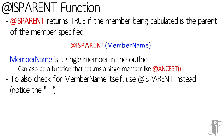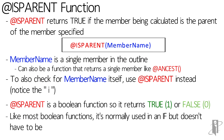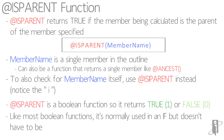If you want to check for the member name itself or its parent, which would be very unlikely to actually do, instead of saying isParent you would say isIParent. It's a boolean function so it returns true, which is one, or false, which is zero. Normally it's used inside of an if function.